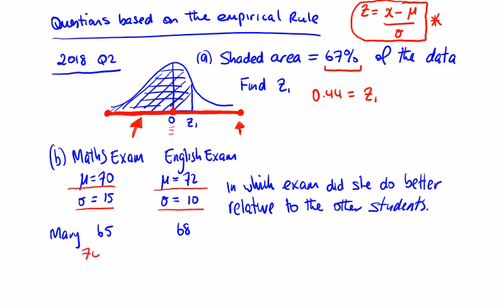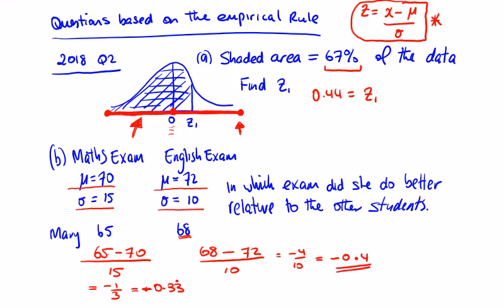So we just fill these values into our z-score formula. So 70 is our test. We're testing 70, we're taking away the average. Sorry my bad, we're testing 65, and we're taking away the average and we're dividing by 15. That's minus 5 over 15, which is equal to minus 1 over 3, which is equal to minus 0.33 recurring. For English, we're testing she got 68. We're testing that against an average of 72 and a standard deviation of 10, and we can see that that's going to be minus 4 over 10, which is equal to minus 0.4.